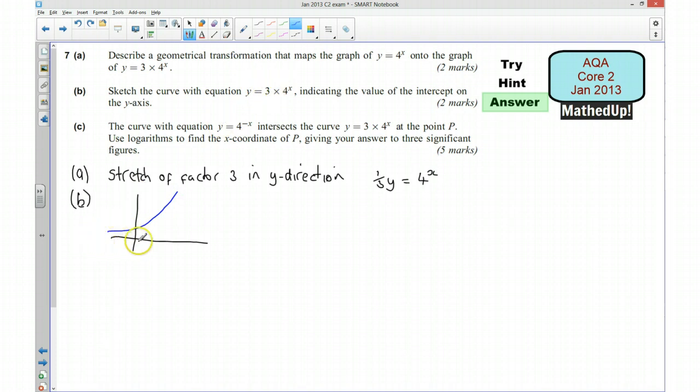And the x-axis is going to be an asymptote. So we don't actually cross the x-axis. The reason being is that the value of this couldn't be negative. There isn't a 4 to the power of something that's going to make this negative. OK, so it can't go below the x-axis.